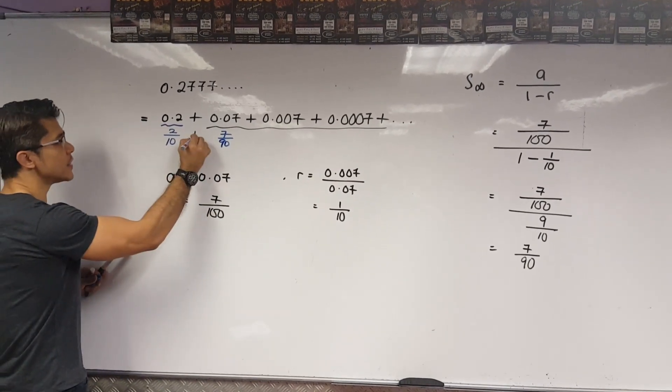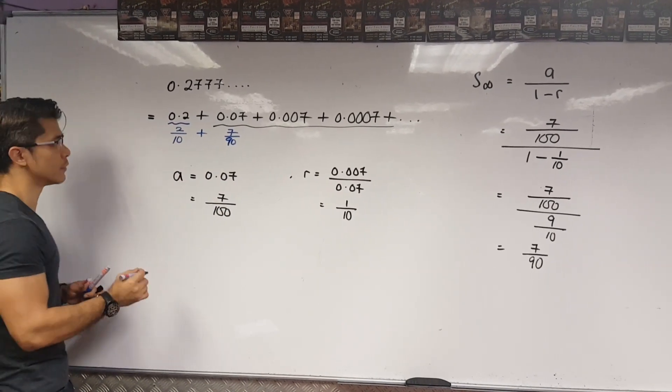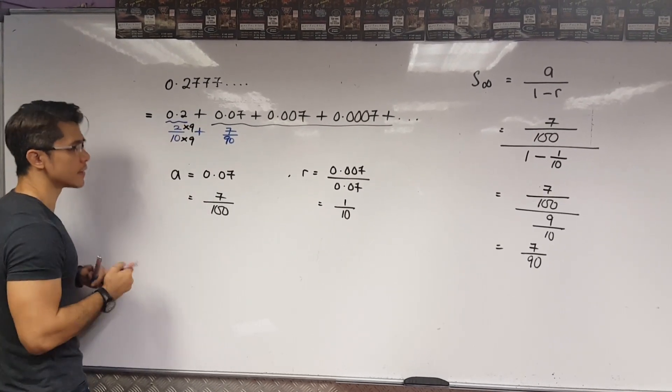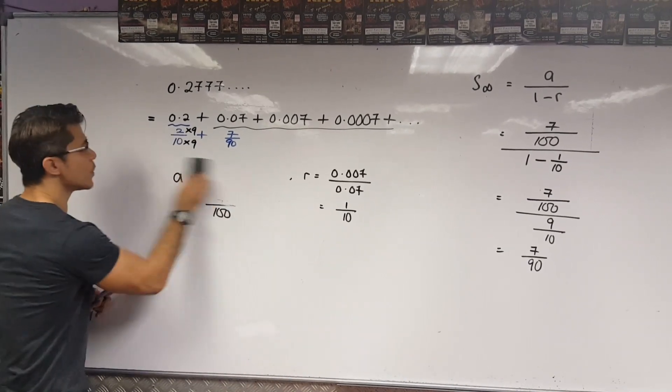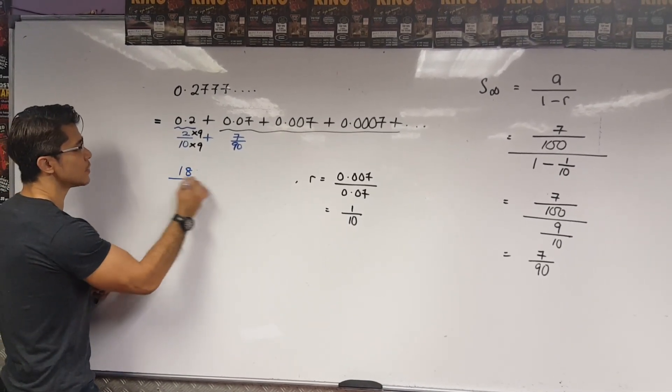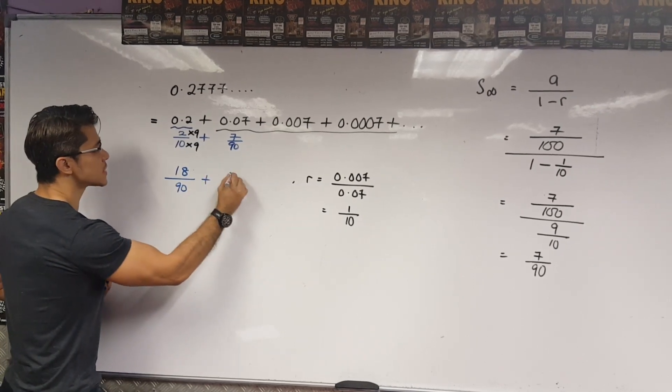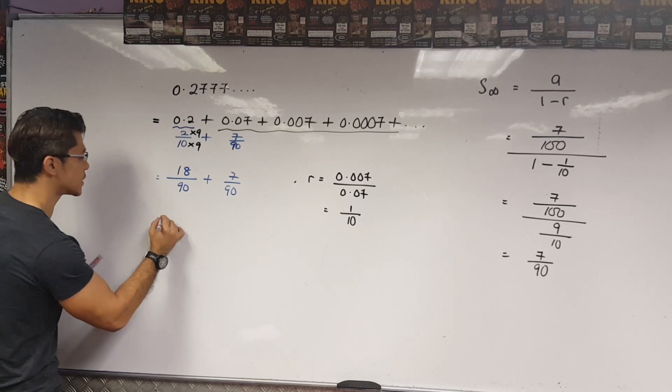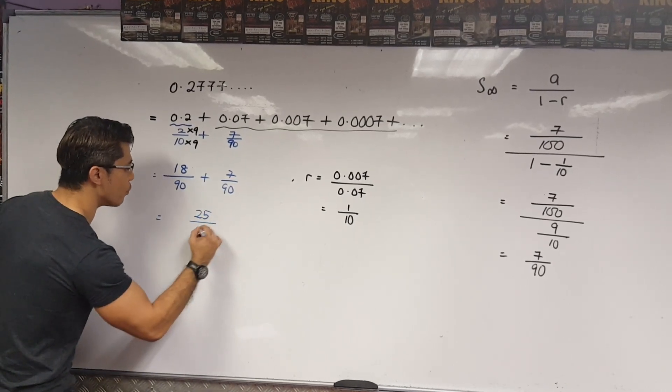The back portion is equal to 7 over 90. So, when I add these two numbers up, well, what do I get? Well, first off, 5 times 9 times 9, that means we will get this to be 18 over 90 plus 7 over 90. I add this up.